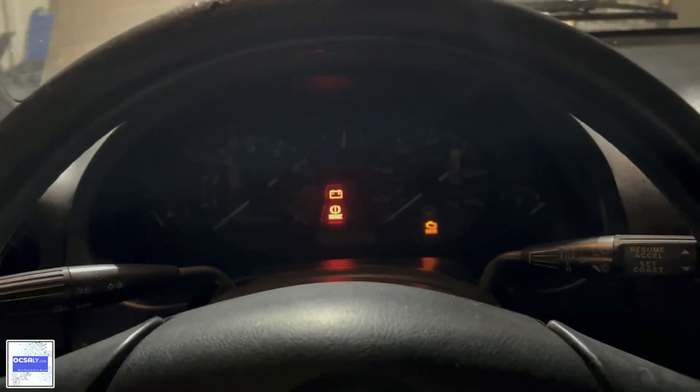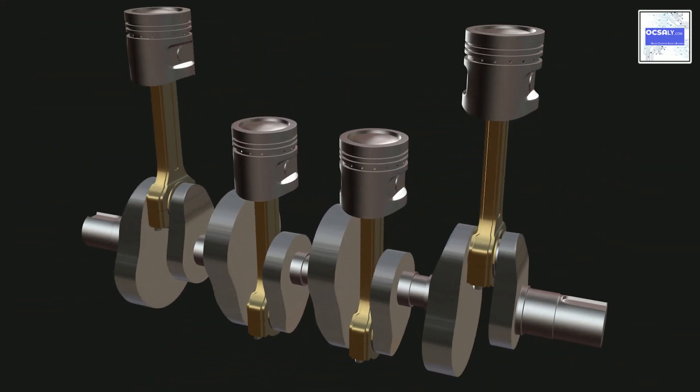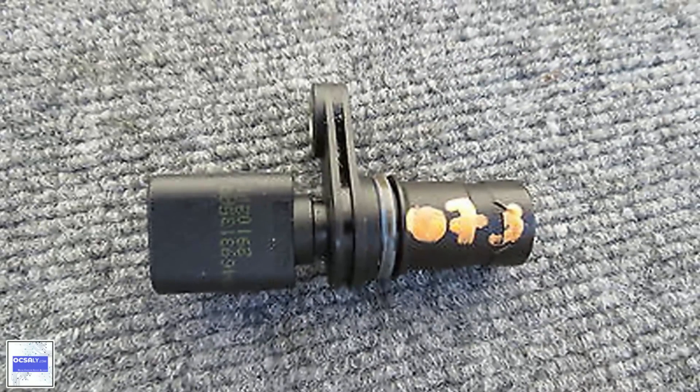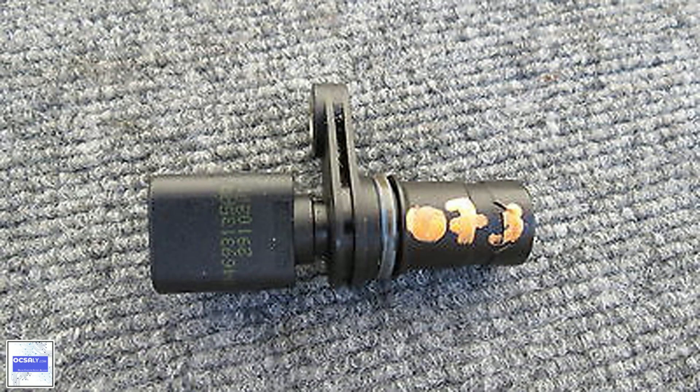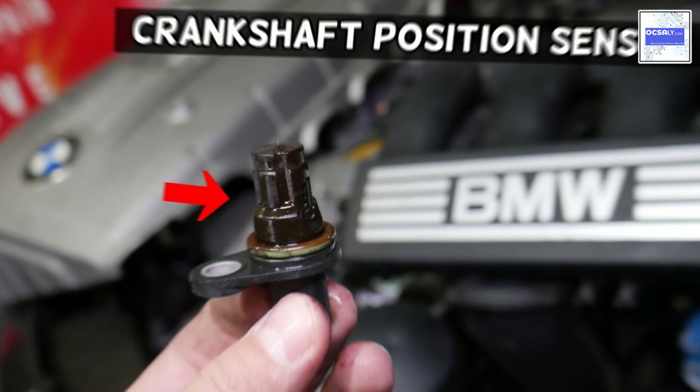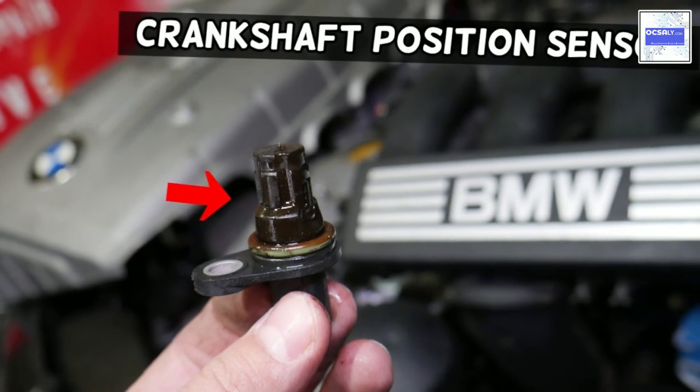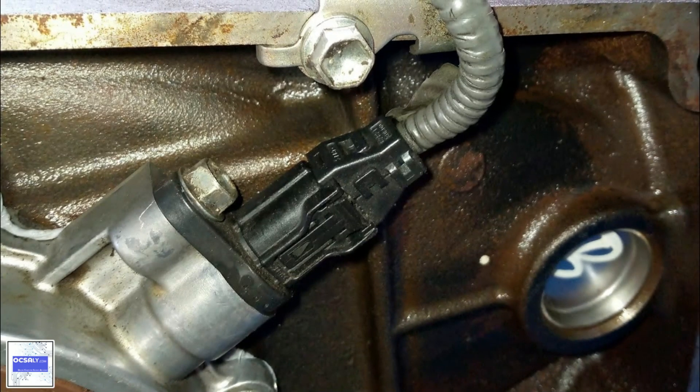How the crankshaft position sensor works? The crankshaft position sensor is positioned so that the teeth on the reluctor ring attached to the crankshaft pass close to the sensor tip. The reluctor ring has one or more teeth missing to provide the engine computer with a reference point to the crankshaft position.